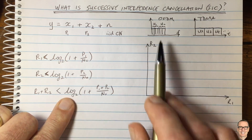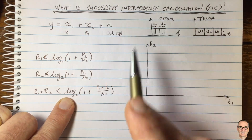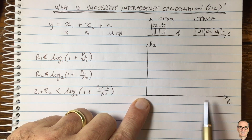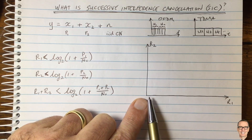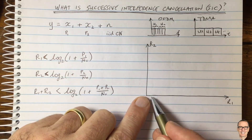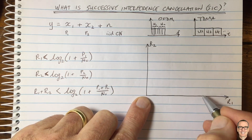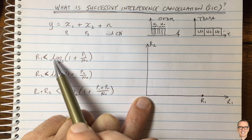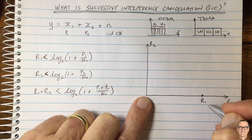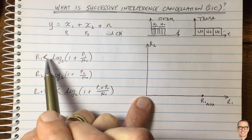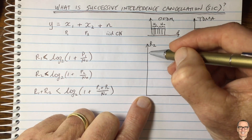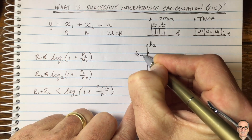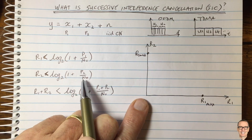How do we interpret these equations, and how do they lead us to thinking about successive interference cancellation? Here is our rate region: the axes represent the rate for user 1 and the rate for user 2, and they have upper bounds. If user 2 does not transmit with any power, you can receive the maximum value R1 max. Similarly, if user 1 was not transmitting, you would get R2 max — the capacity tells us you could transmit up to that rate.